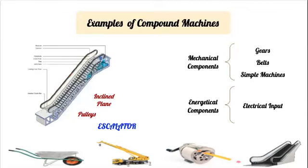The last example we're going to be analyzing is the escalator. An escalator is made up of two simple machines mainly: the inclined plane, which provides a larger distance in which the load can be carried without applying a lot of effort, and the pulleys to aid with the motion of the steps. The energetical component will be the electrical input, while the mechanical components include the gears, belts, and the simple machines. With this, we've finished this topic of compound machines, and now it's time to continue with the activity. Thank you.